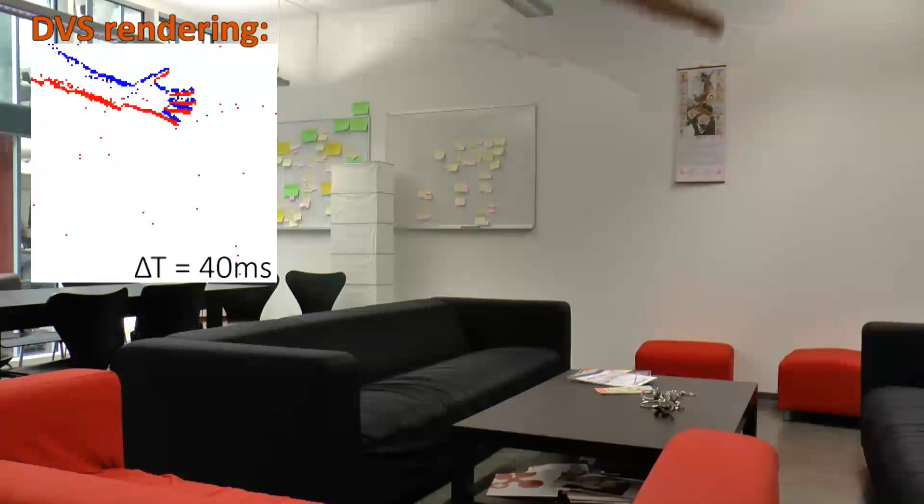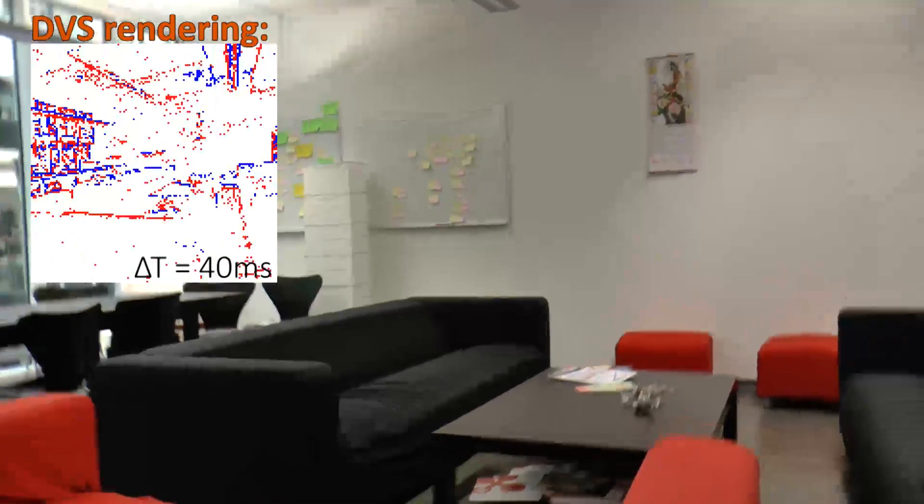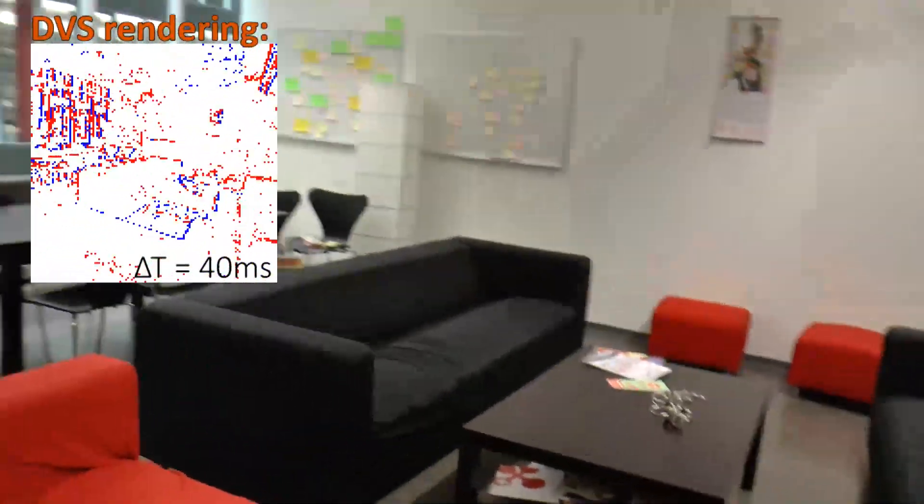When we keep the DVS steady, only motion in the scene generates events. However, when we start moving the DVS, gradients in the scene become visible.